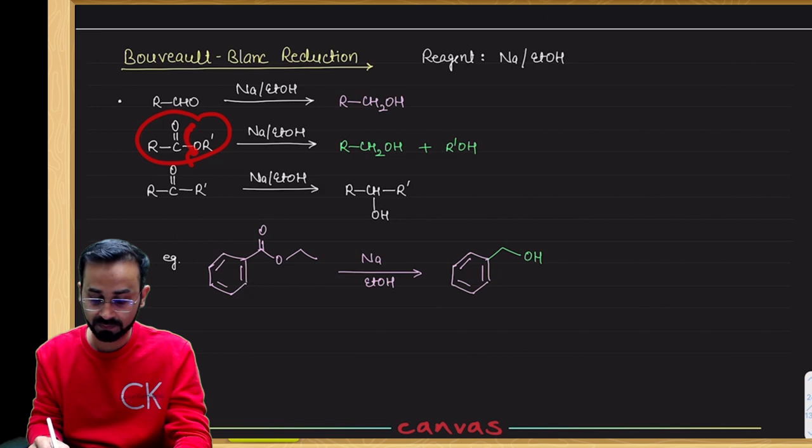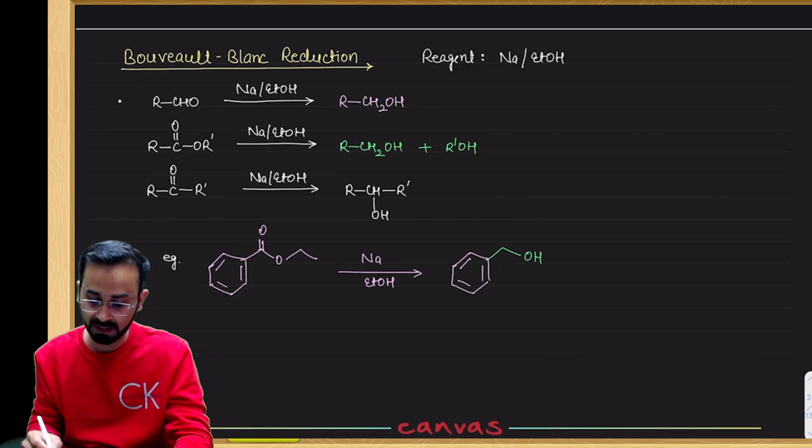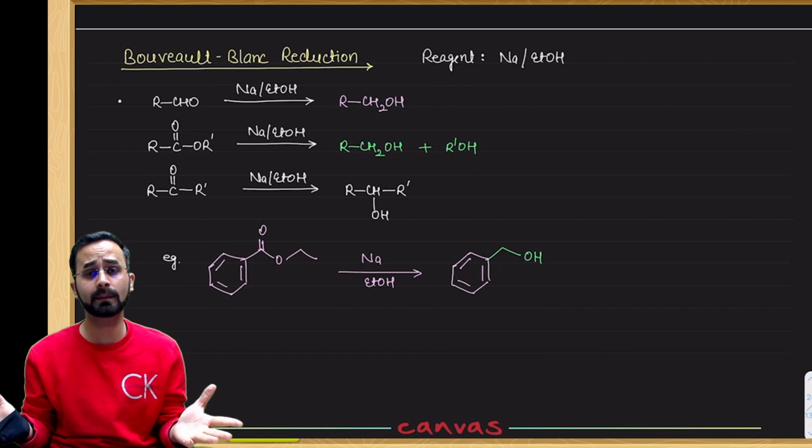The ester will break into two alcohols: one RCH2OH and one R'OH. And the ketone will convert to a secondary alcohol. So that is simple Bouveault-Blanc reduction.